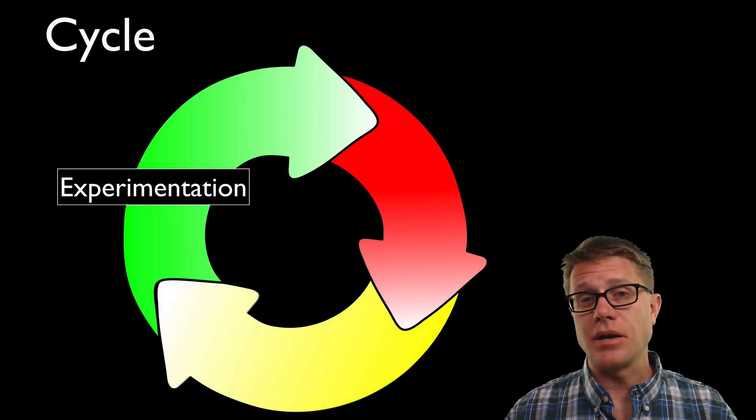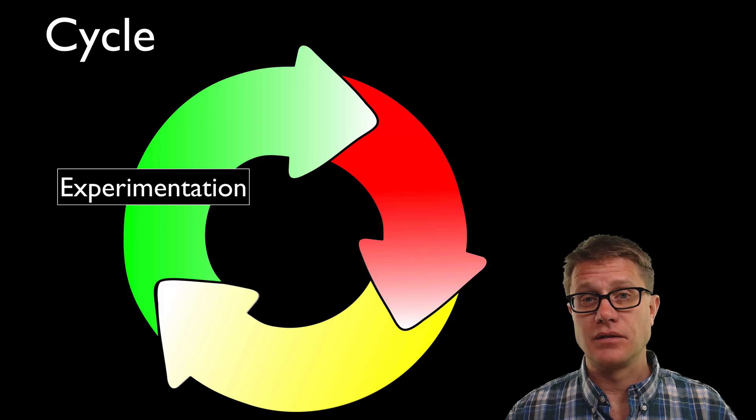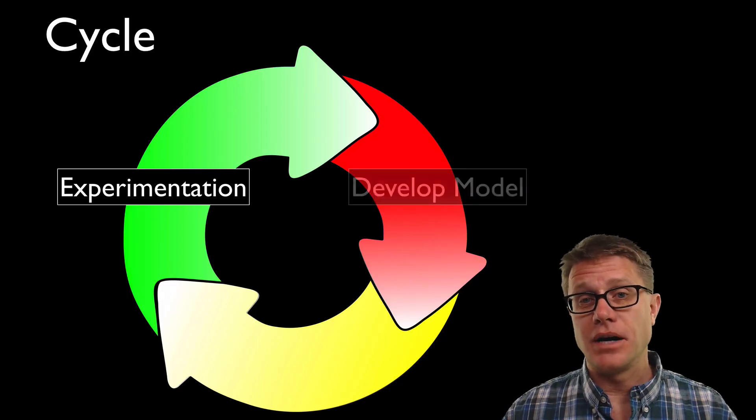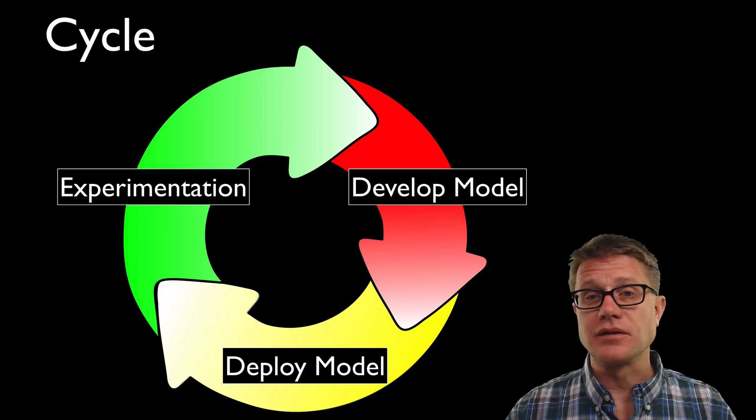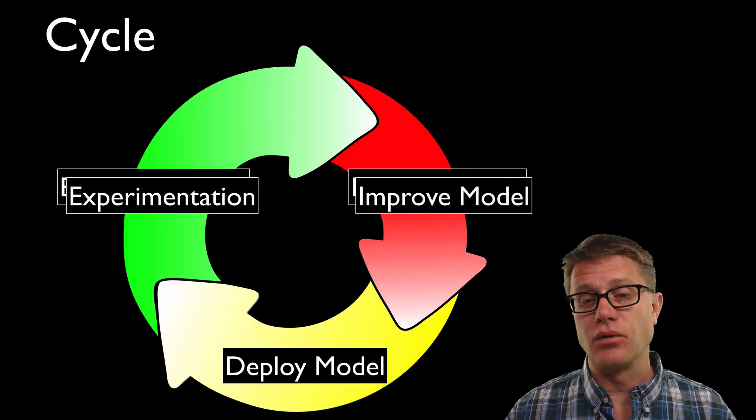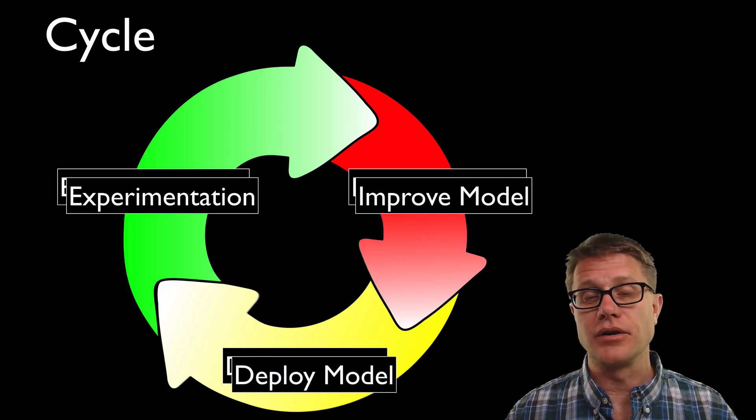And so as we think about modeling the first step is to do some experimentation. After that we develop a model. Understanding that once we deploy that model there are going to be problems with it. So we have to do more experimentation and over time we improve the model over and over again.